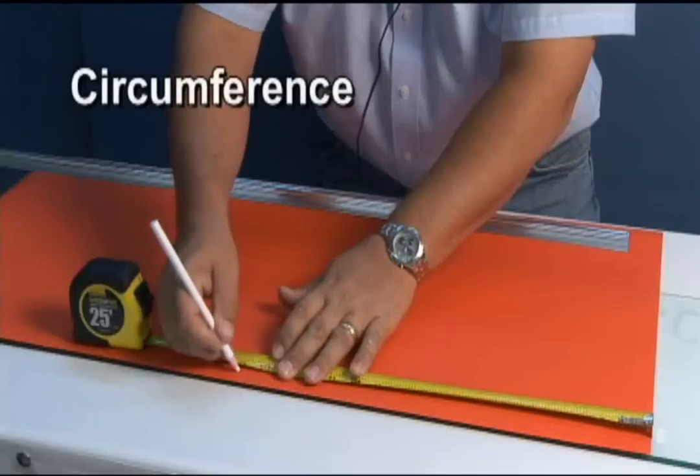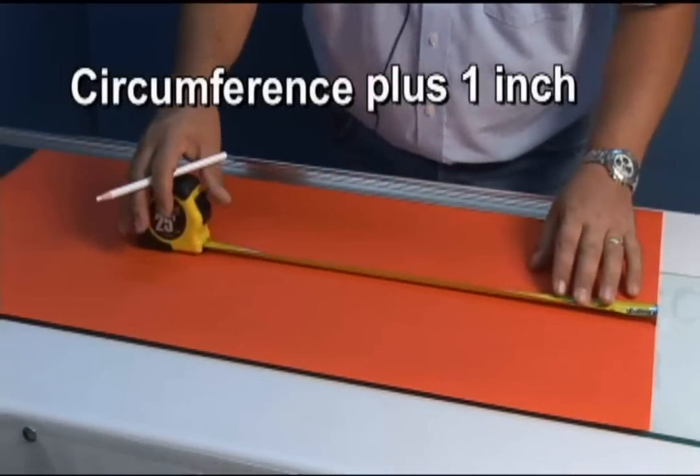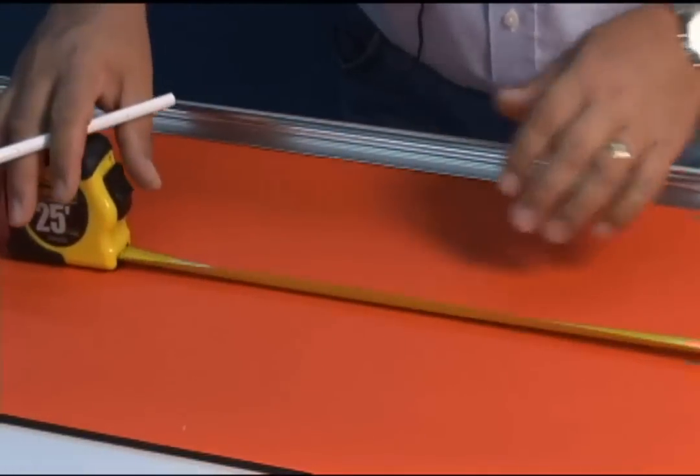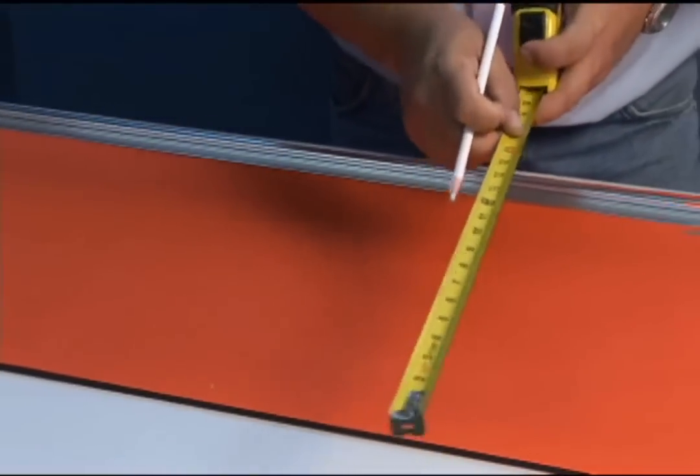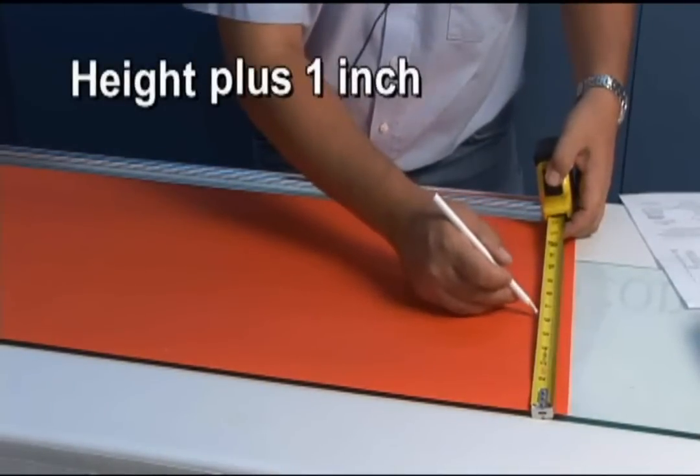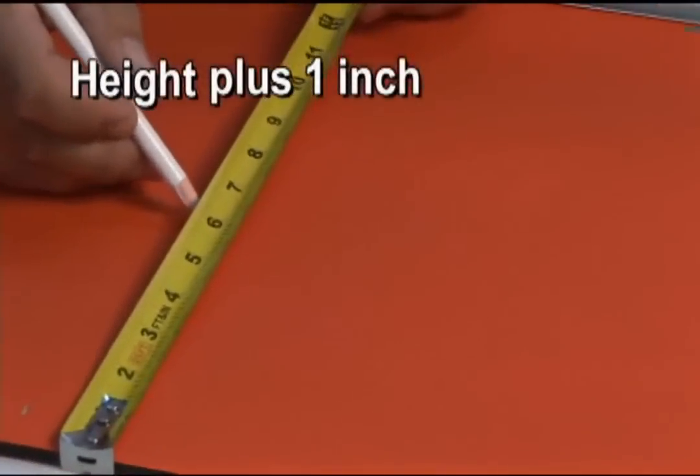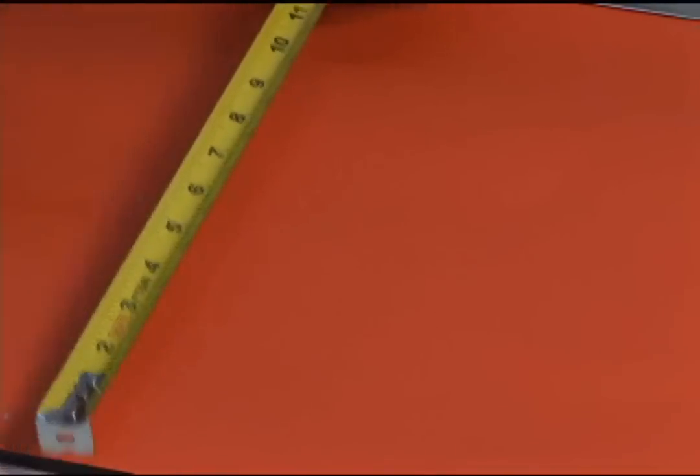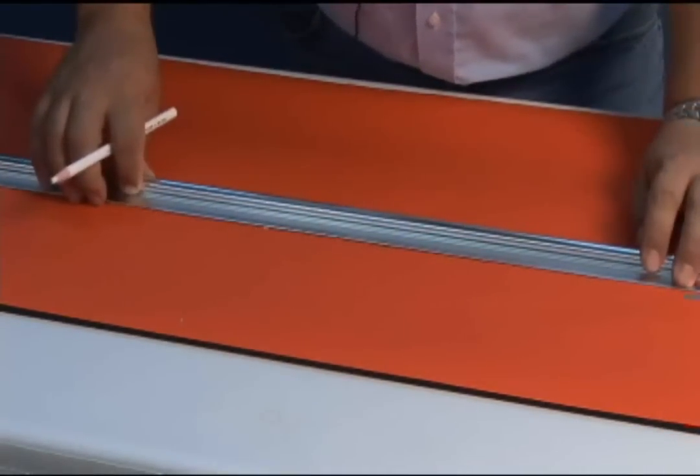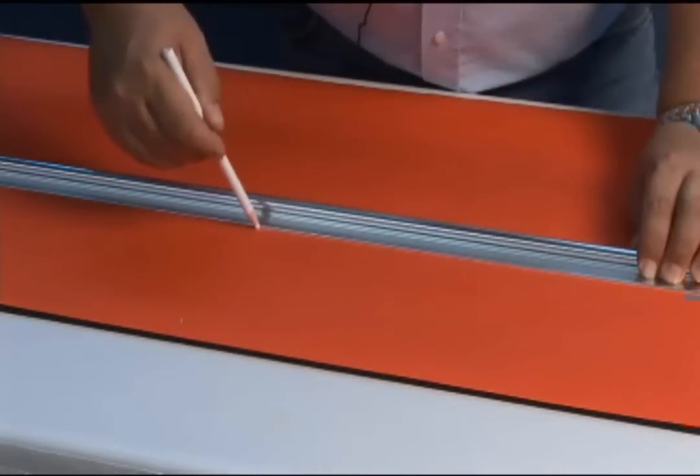We'll take that circumference and add one inch. One inch will be used for half inch seam allowances on both edges. So we add one inch to that circumference length here. Mark our fabric, and then we'll also take the height and add one inch, which makes the height of this 6.5 inches or six and a half inches. So circumference plus one inch and height plus one inch.